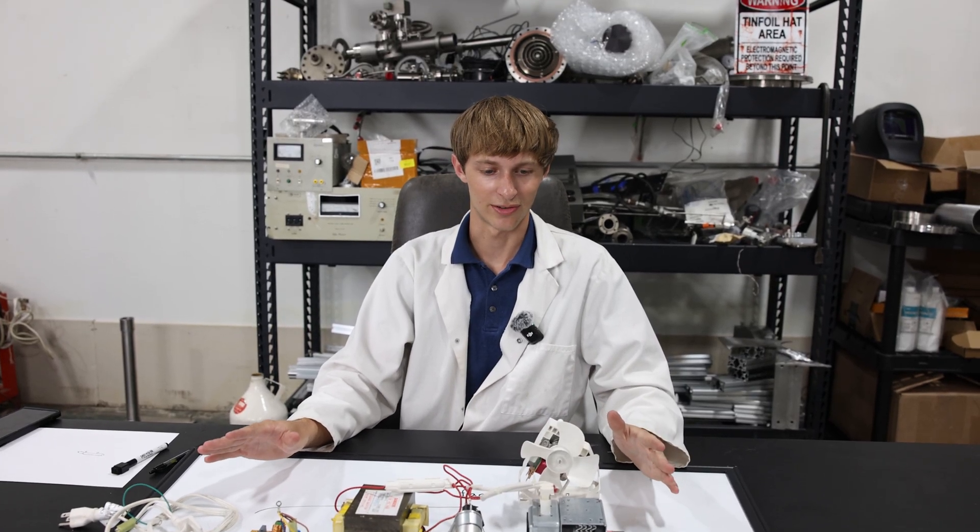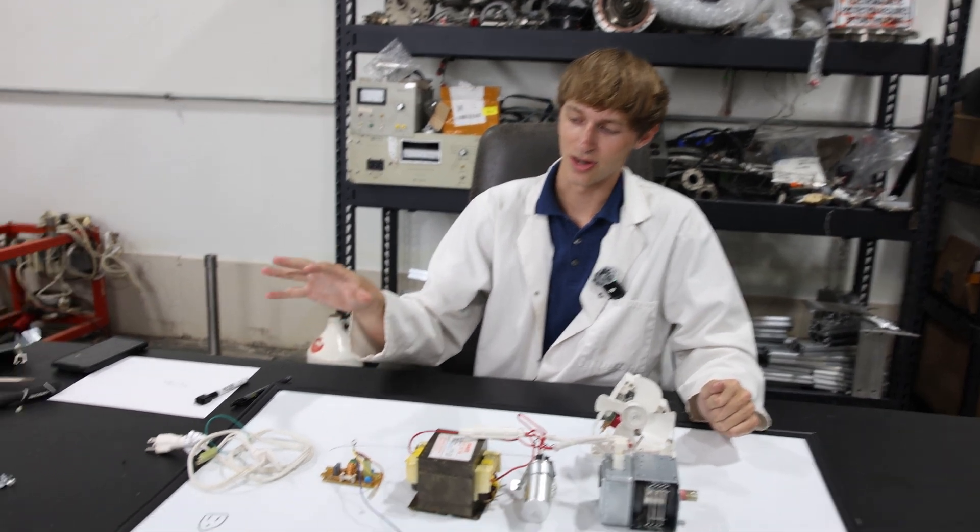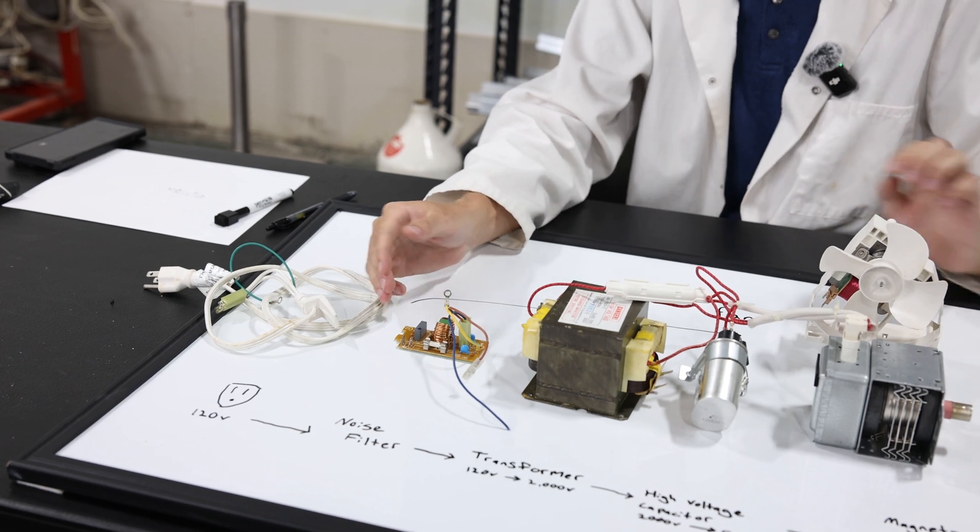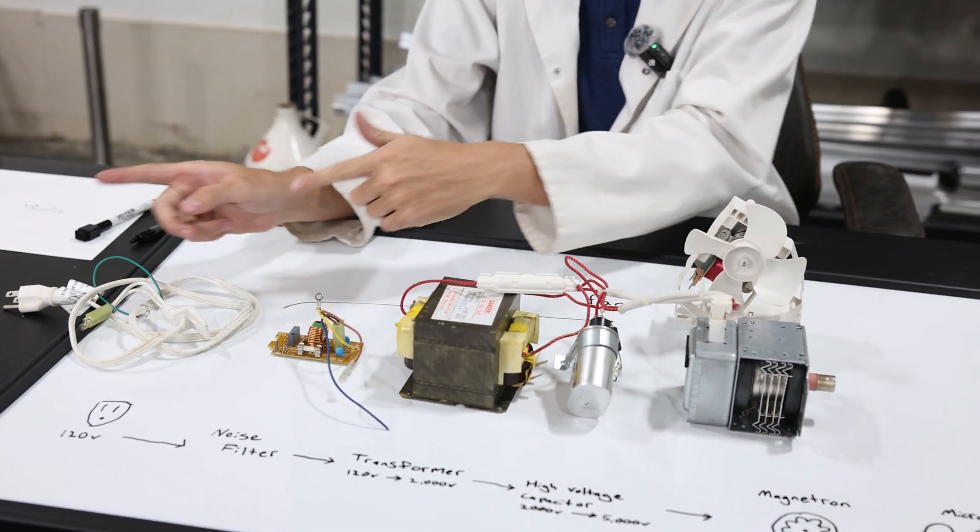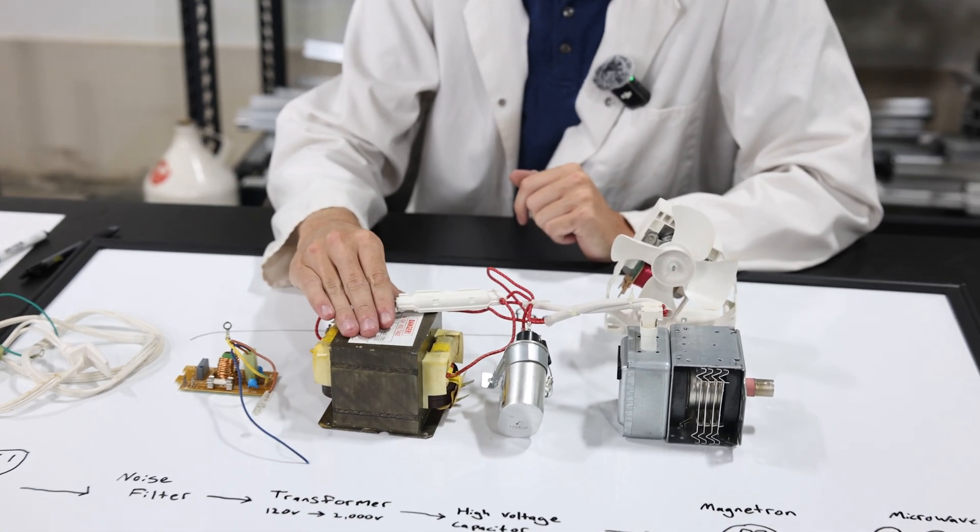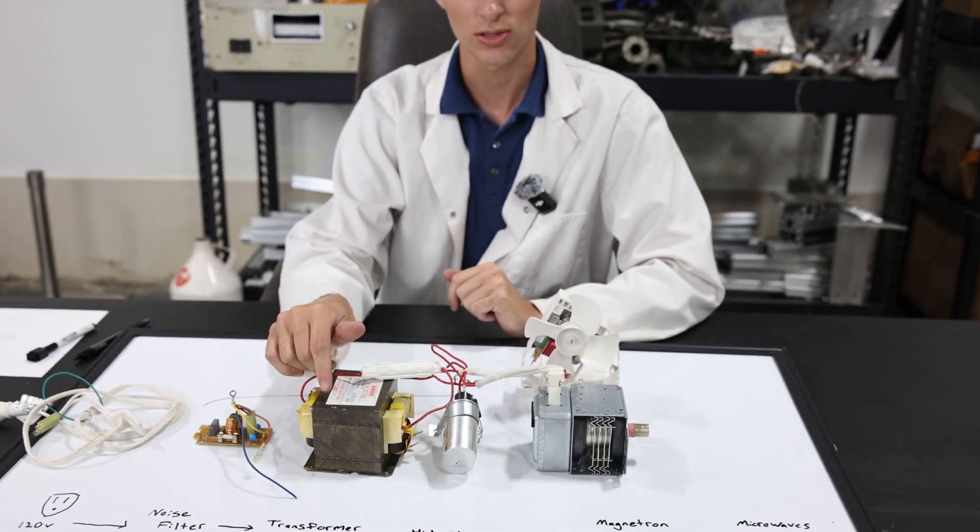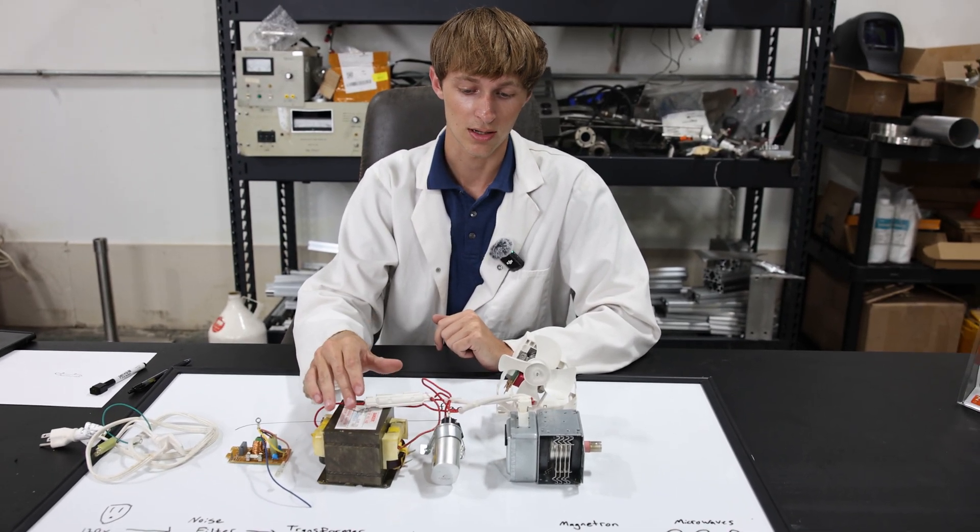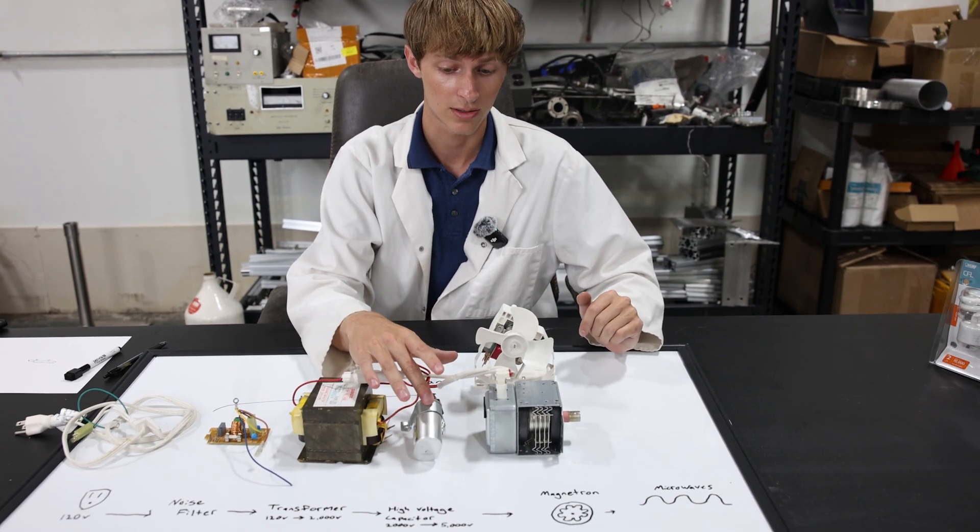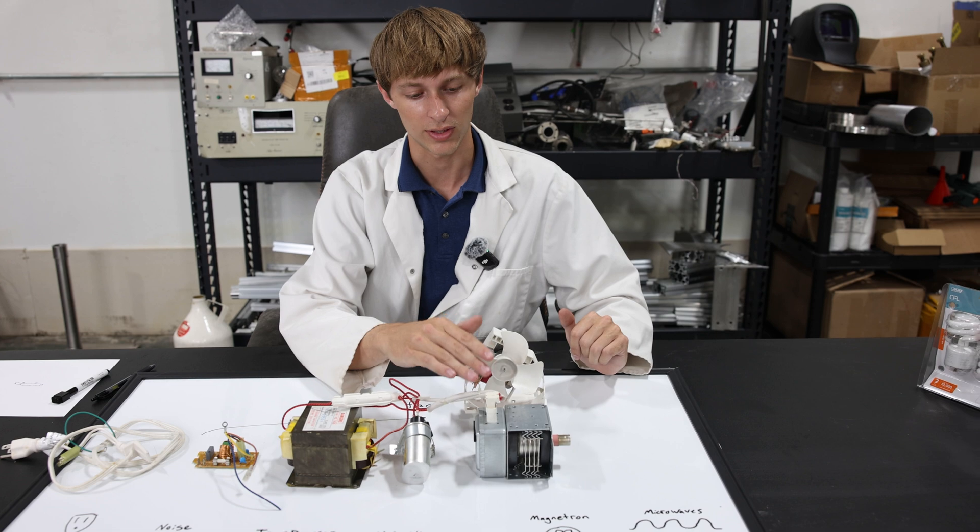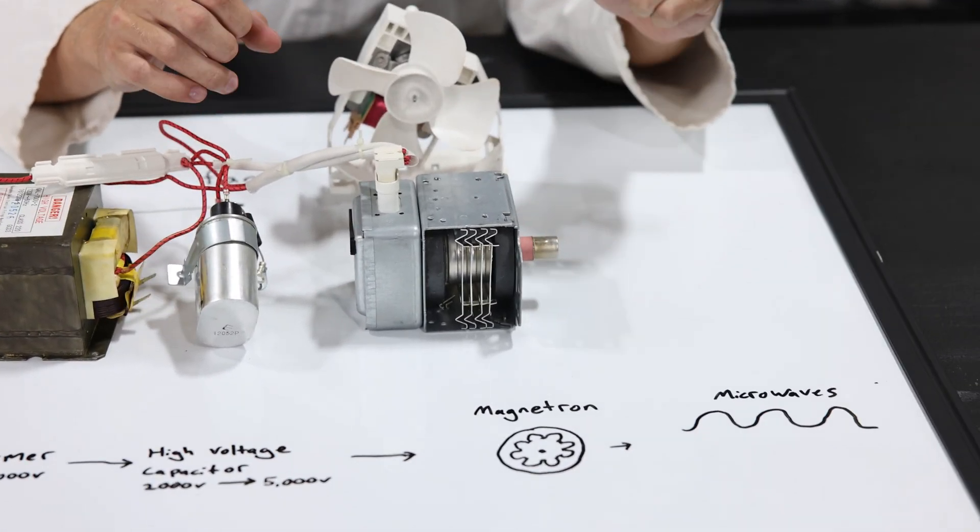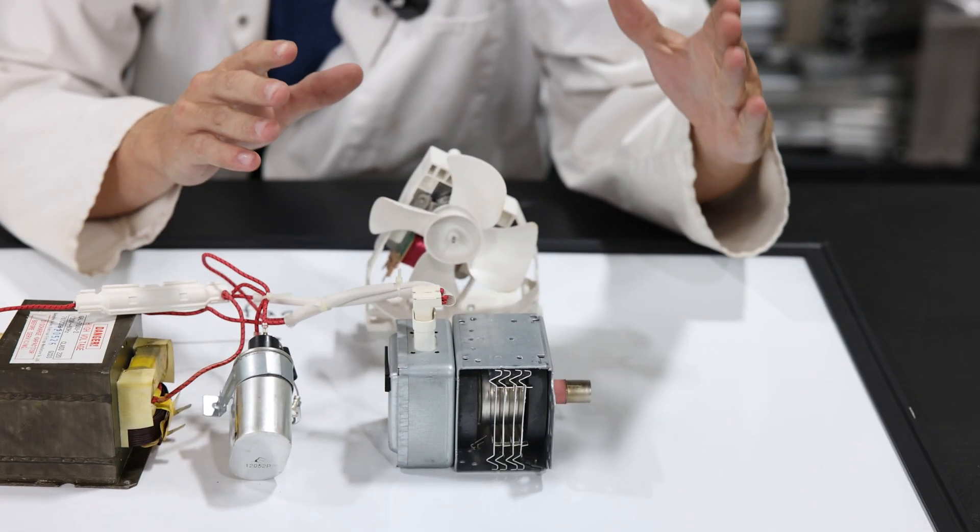This is a basic overview of what we're going to be using for our ray gun. We have our 120 volt input and we're going to pass that through a noise filter which keeps high frequencies from traveling up into our microwave system and vice versa. After that we pass it to our transformer which steps up our voltage from 120 to 2000. From there we step it up again to 5000 volts using our high voltage capacitor and then we directly feed that into our magnetron. Our magnetron is what makes all the magic happen and basically creates the high frequency microwaves.